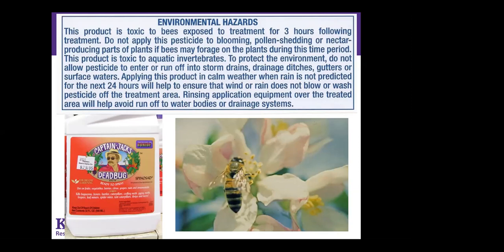Remember Captain Jack's Dead Bug — commonly used in organic production, it doesn't have a signal word, so you might presume it was safe to everything. In this case, it can be deadly to bees as well. The label specifically says not to treat areas with blooming, pollen-shedding, or nectar-producing parts of plants during a three-hour period. It's also toxic to aquatic invertebrates, telling you not to contaminate storm drains, drain ditches, gutters, or surface waters. Don't presume products are safe — read the label, find out the hazards and precautions, and follow them.